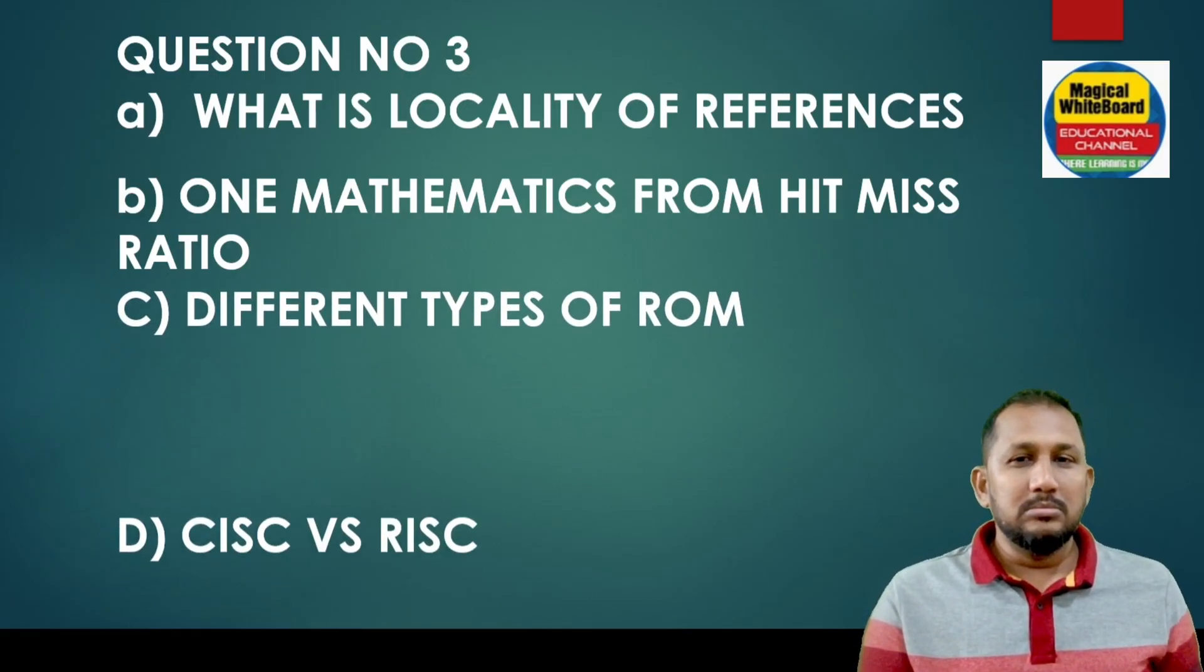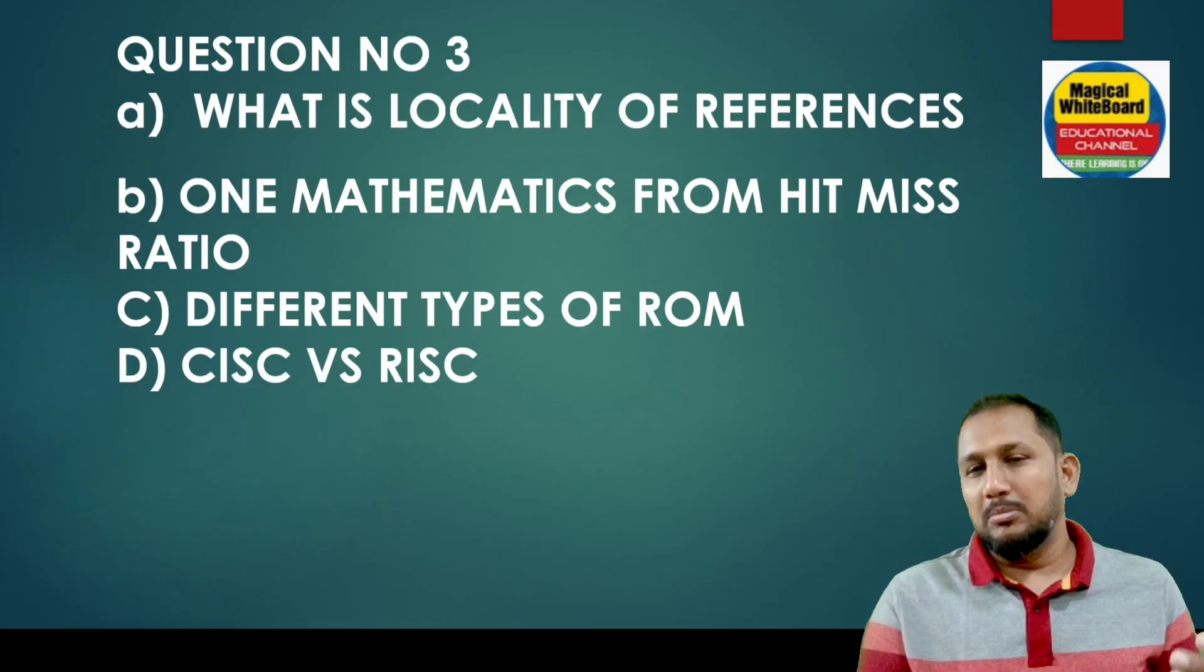Different types of ROM - EPROM, EEPROM. CISC, complex instruction set computer, reduced instruction set computer. Difference. Next question, question number 4.